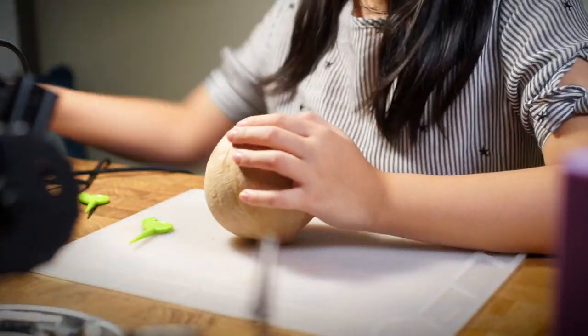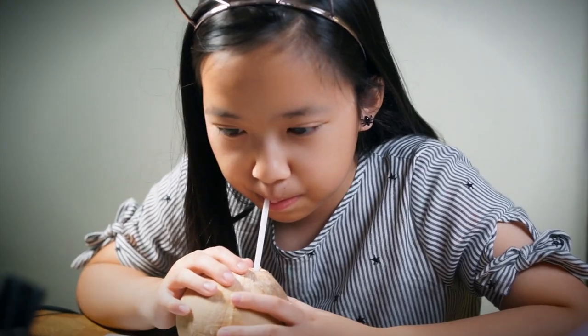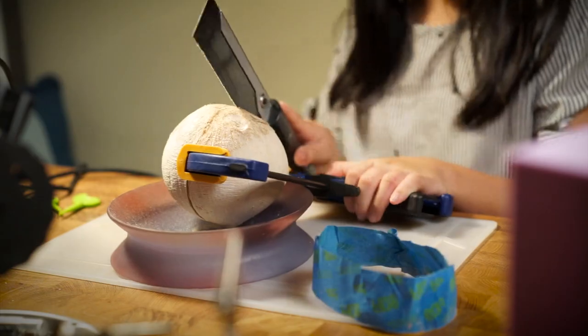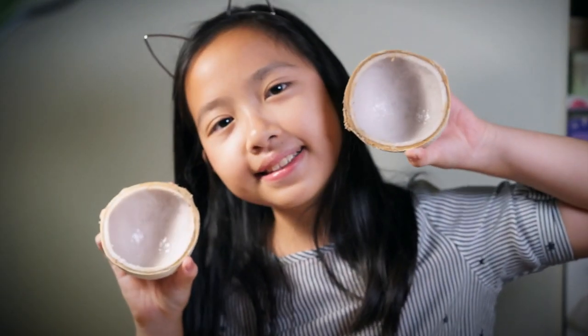I took a regular coconut and drained all the tasty juice. To make sure I cut a relatively straight line, I used blue tape to mark it off. And after a bit of work, I had two cleanly cut halves.